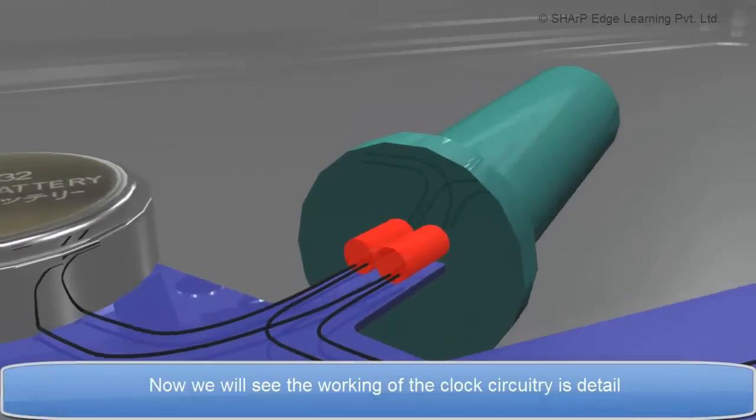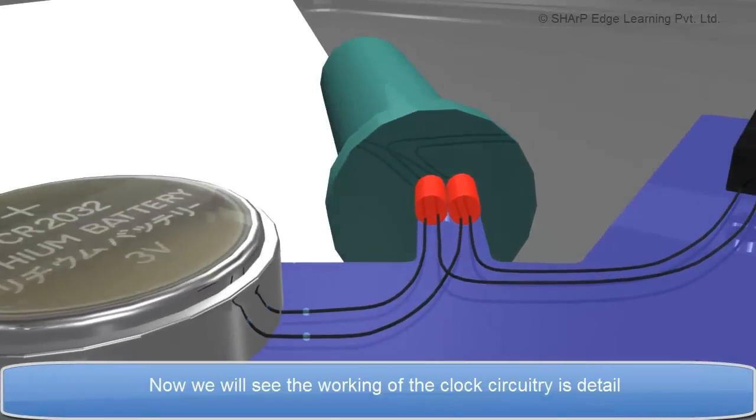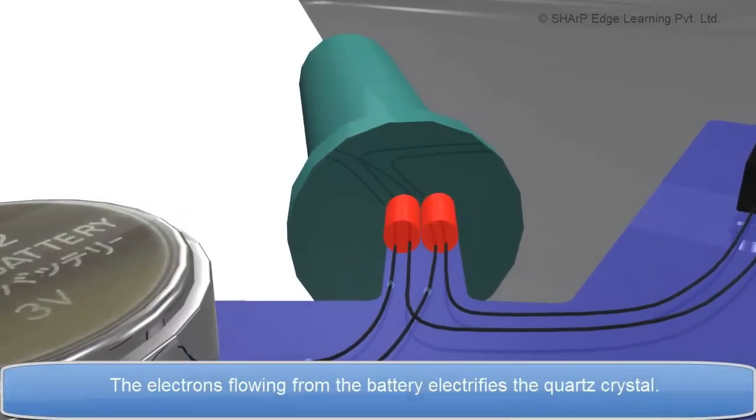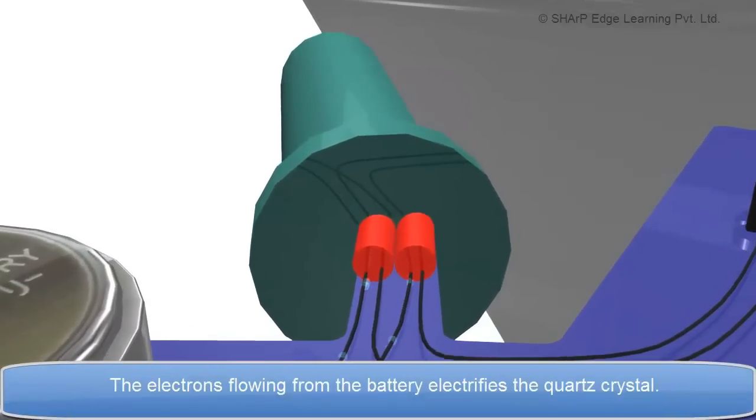Now we will see the working of the clock circuitry in detail. The electrons flowing from the battery electrifies the quartz crystal.